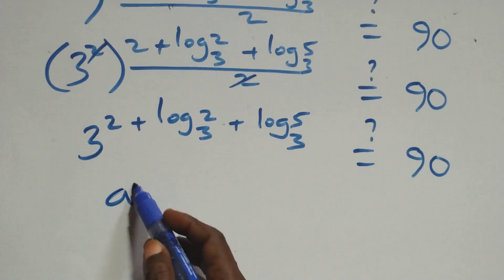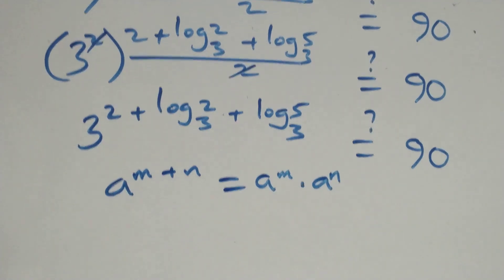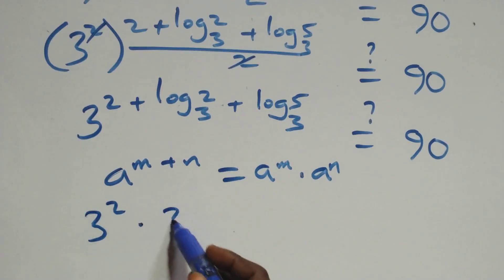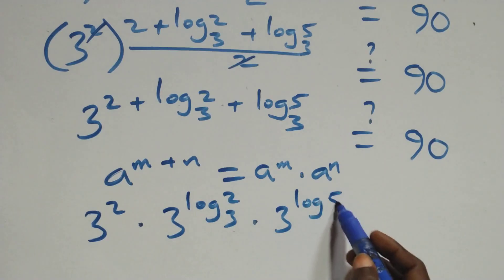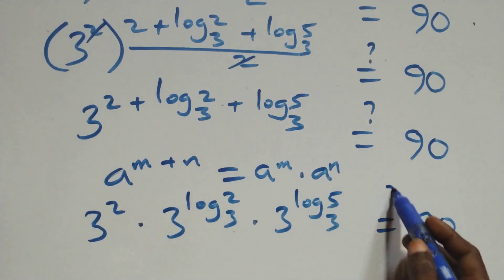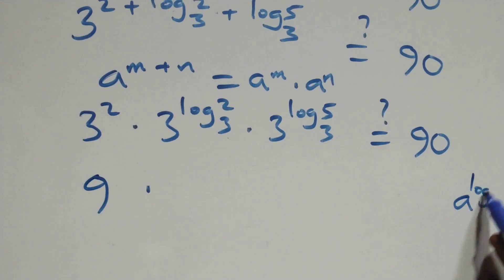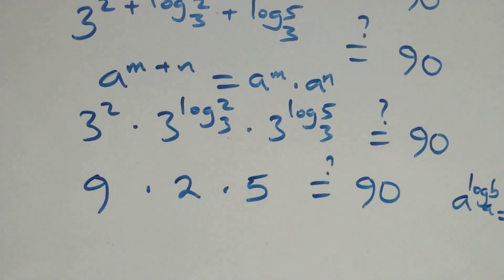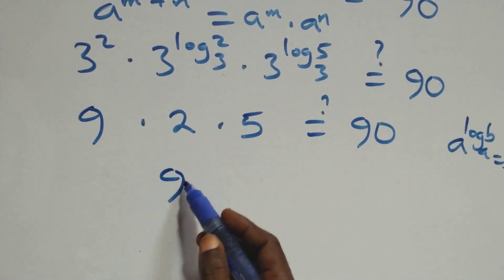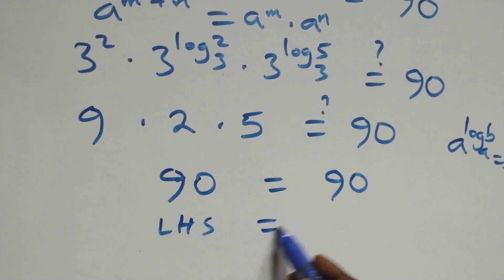We apply the index law: a raised to power m plus n equals a raised to m times a raised to n. This becomes 3 squared times 3 raised to log 2 base 3, times 3 raised to log 5 base 3, equals 90. Now 3 squared is 9. Using the identity a raised to log base a of b equals b, we get 9 times 2 times 5 equals 90. That is 9 times 10 equals 90, which equals 90. The left-hand side equals the right-hand side.